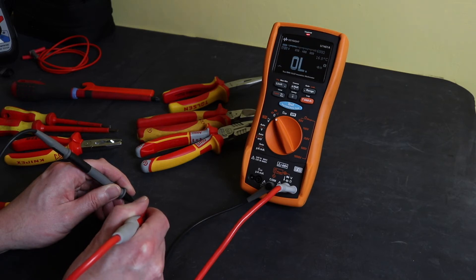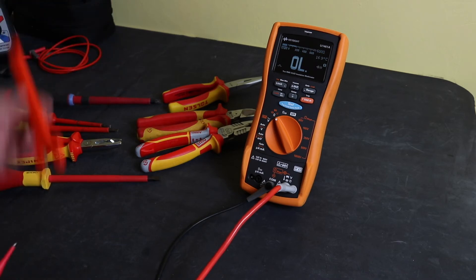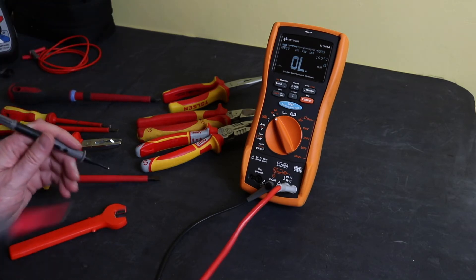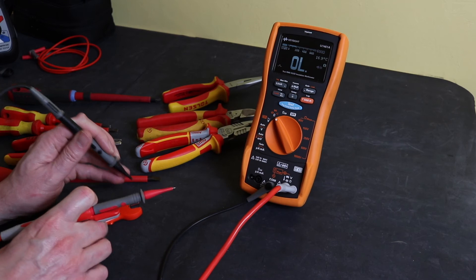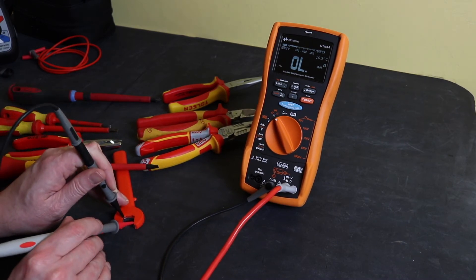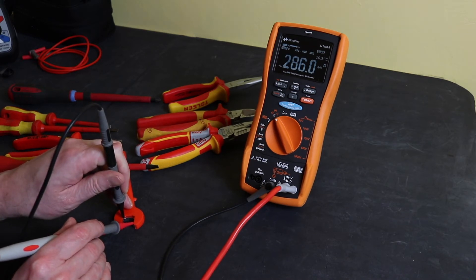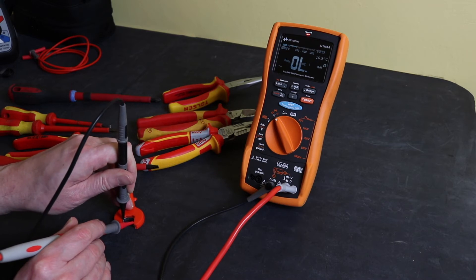Again it appears to be some sort of a surface coating. The final one from my toolkit is this ITL spanner. Again this is surface resistance there but it's not truly insulating. There we go, we got there.